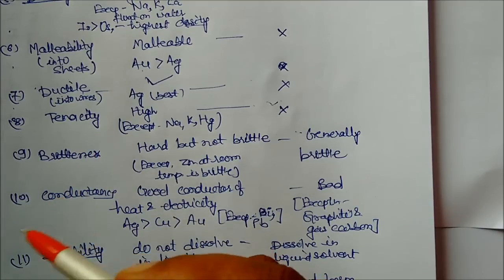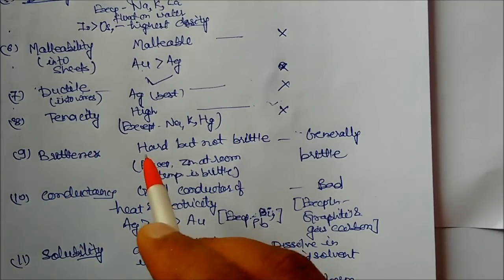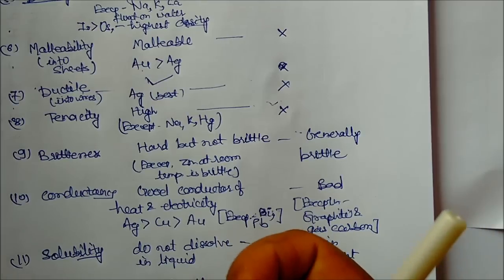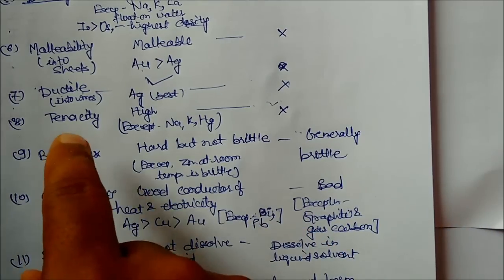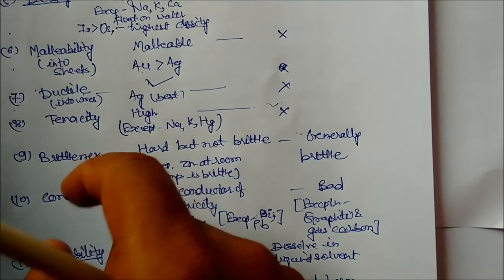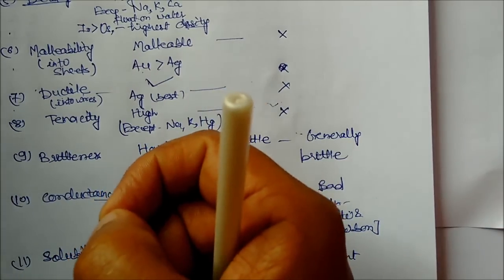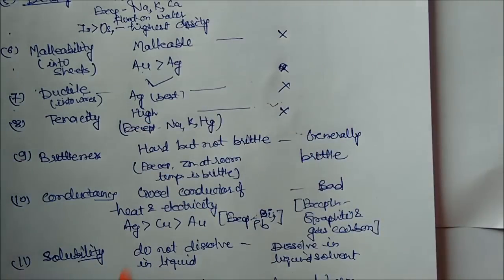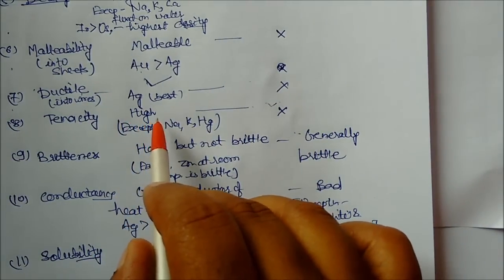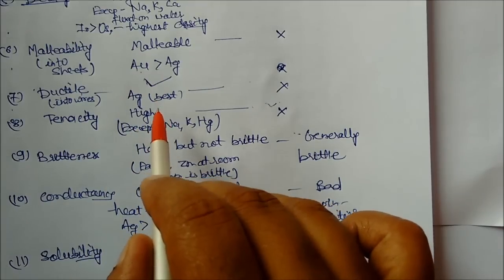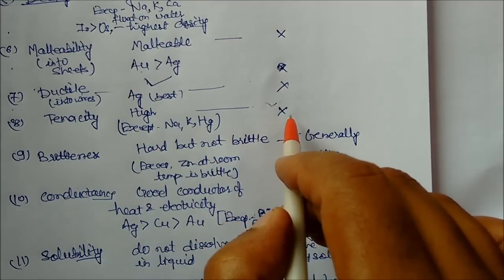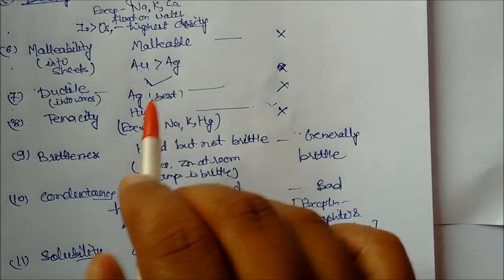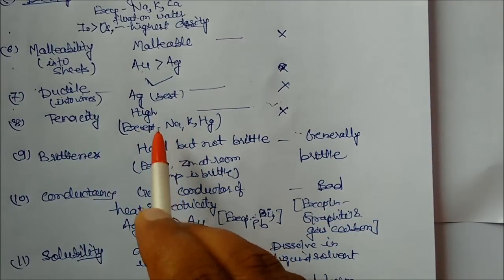Tenacity means which has stretching power. After stretching, it will not stretch further—not like rubber. They will not gain their own shape. Metals have high tenacity, but nonmetals do not have high tenacity. Exception: sodium, potassium have low tenacity.